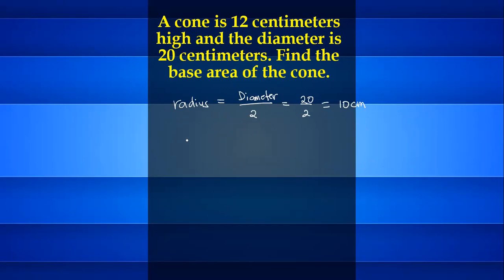Now to get the area of base of a cone, area of base is equal to pi times the radius squared.